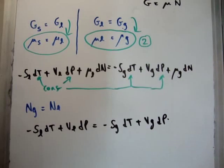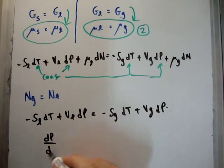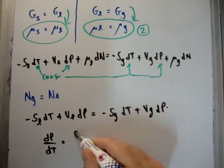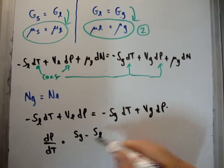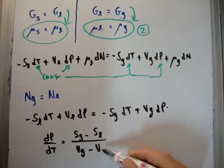Or if we want we could rearrange this and make it look much nicer: dP/dT equals the entropy of the gas minus the entropy of the liquid divided by the volume of the gas minus the volume of the liquid.